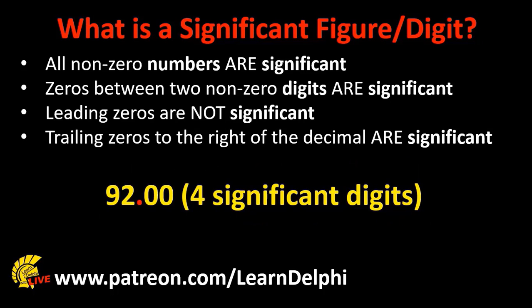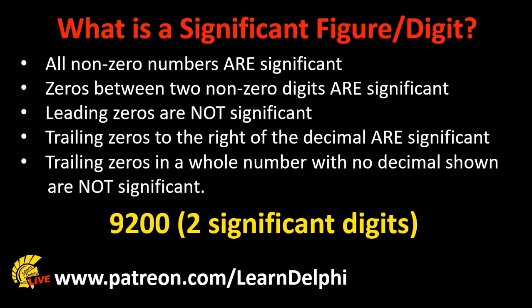Trailing zeros to the right of the decimal are significant. So the number 92.00 has 4 significant digits, because the trailing zeros after the decimal point are also counted as significant. But if we move the decimal point two places to the right to make a whole number with trailing zeros, it becomes interesting. The trailing zeros are not significant if it is a whole number with no decimal. For example, the number 9200 has only 2 significant digits.